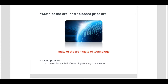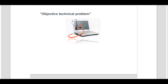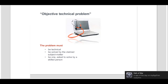Once the closest prior art has been established and all the technical differences between the subject matter of the claim and the closest prior art are identified, the objective technical problem is formulated from these differences. The problem must be a technical problem; it must actually be solved by the claimed subject matter, and the problem must be one that the skilled person in the particular technical field might realistically be asked to solve.